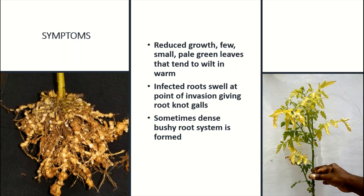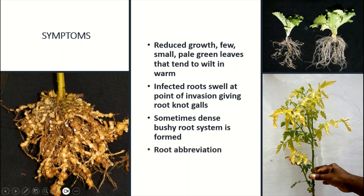Sometimes a dense bushy root system is formed. Here you can see the dense bushy root system and knots present on the roots. Similarly, root abbreviation can be observed. A healthy root system has lateral roots and sufficient root hairs, but in the infected case you can see the root abbreviation as well.